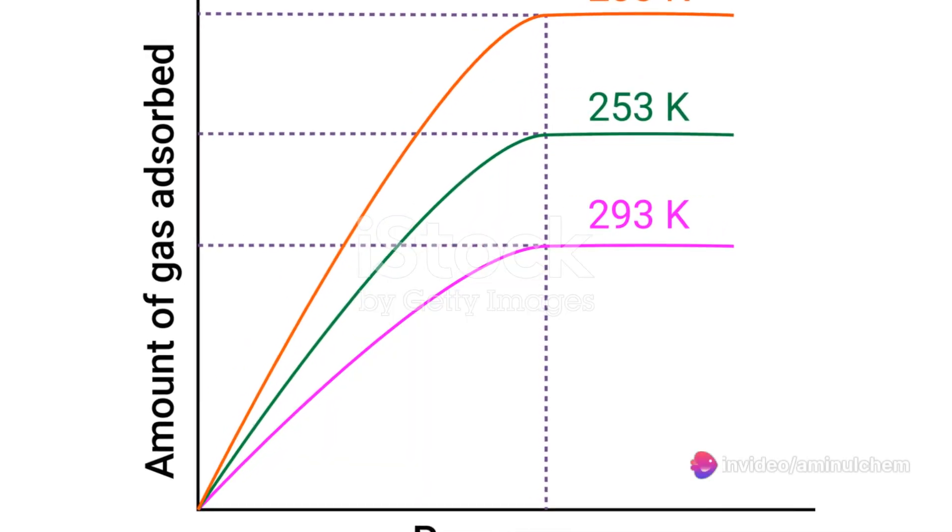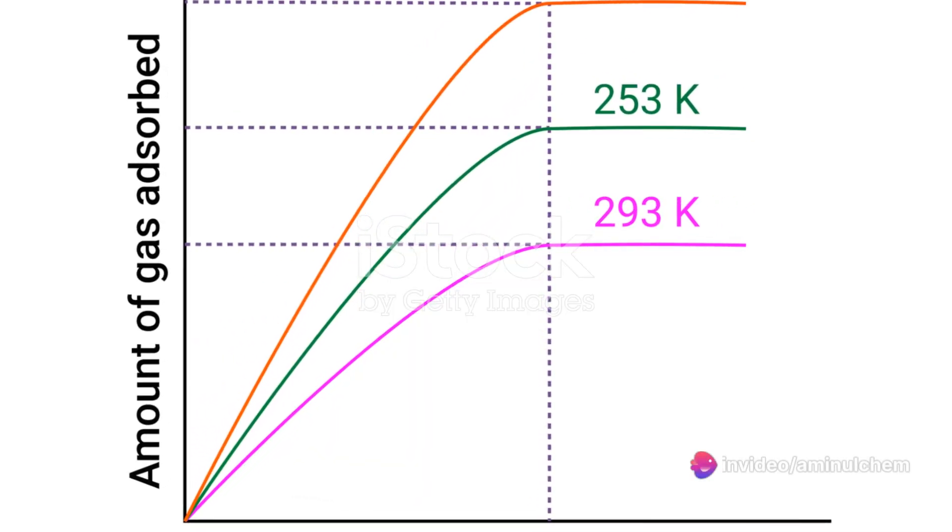Here, x represents the mass of the adsorbate, the substance being adsorbed, and m is the mass of the adsorbent, the material doing the adsorbing. P represents the pressure, and k and n are constants.